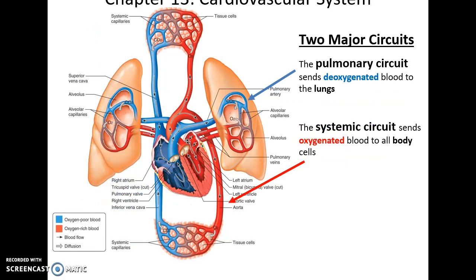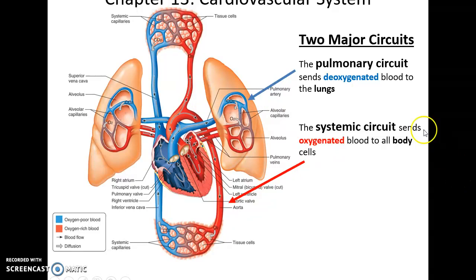There are two main circuits to the cardiovascular system. There's the pulmonary circuit that carries deoxygenated blood from the heart to the lungs in order to get oxygenated and return to the heart, and then the systemic circuit that carries the oxygenated blood throughout the body, and then eventually the deoxygenated blood returns to the heart to continue on through the pulmonary circuit again.